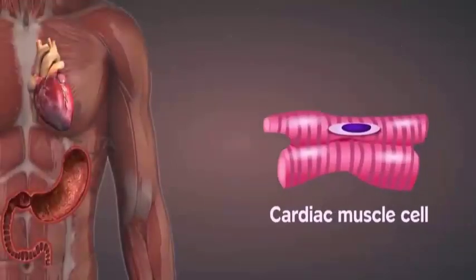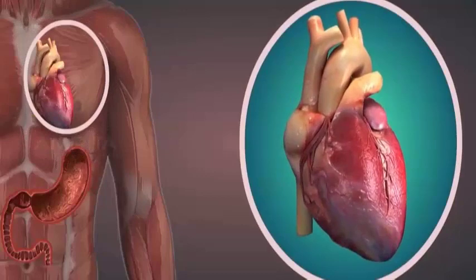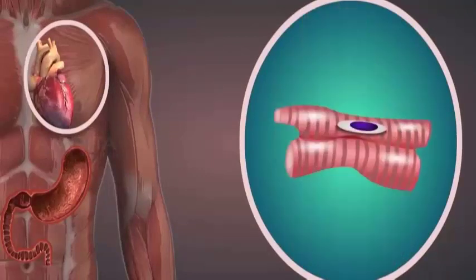The cardiac or heart muscles are involuntary muscle cells that contract and relax throughout life. They are cylindrical, branched, and uninucleated.